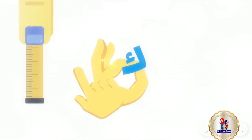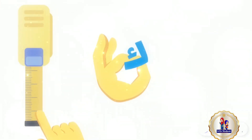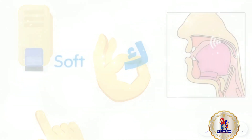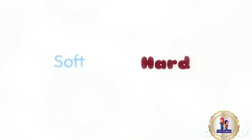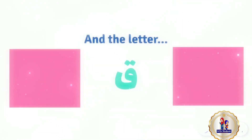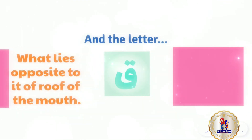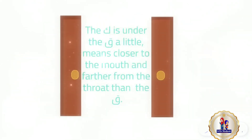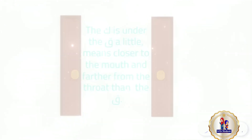The letter qaf is produced from the deepest part of the tongue, where it meets the soft and hard palate of the roof of the mouth. The letter kaf is also from the deepest part of the tongue, where it meets the soft palate. The kaf is positioned a little closer to the mouth and farther from the throat than the qaf.